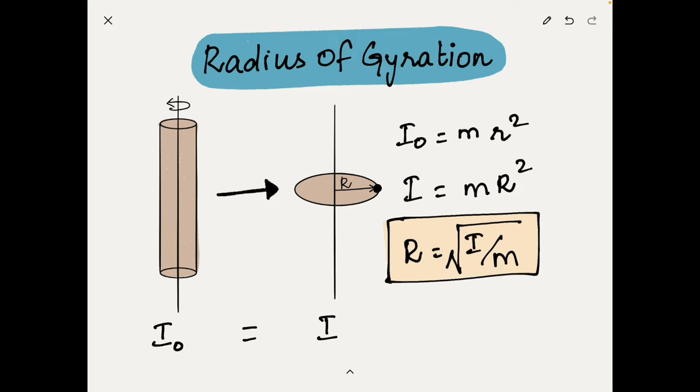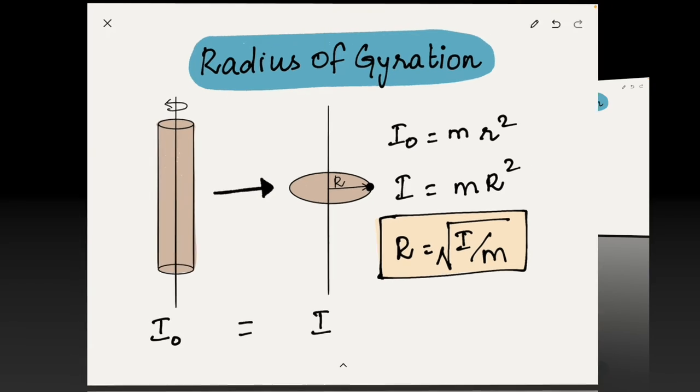Now you might ask whether it is possible to express the radius of gyration in terms of area moment of inertia. I will talk more on that in the next section.